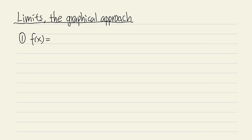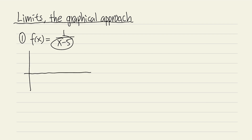For the first one, let's say f of x equals 1 over x minus 5. You should know how to graph this kind of equation — make sure you review your pre-calculus or algebra. From the denominator we know that x cannot equal 5, otherwise you get 1 over 0, so we have a vertical asymptote. Let's go to x = 5 and draw the vertical asymptote. The curve looks like this on both sides.